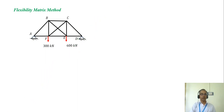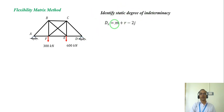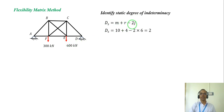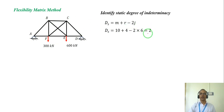The degree of static indeterminacy is given by m plus r minus 2j, where m is number of members, r is number of reactions, and j is number of joints. This comes out to be 10 members plus 4 reactions — 2 here and 2 here — and 6 joints, giving a total degree of static indeterminacy of 2.